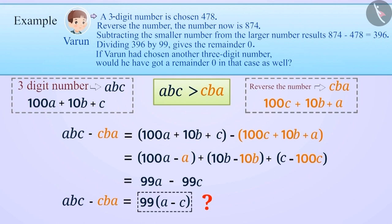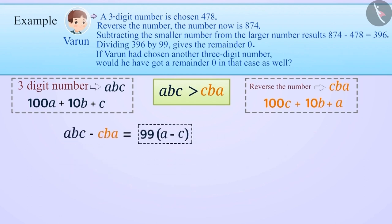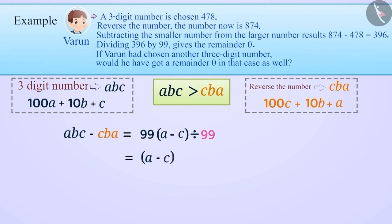Think for a while. This means that the result of ABC minus CBA is a multiple of 99. So if the result of ABC minus CBA is divided by 99, the result will be A minus C and the remainder will be 0. Therefore, we can say that this situation is true for every three-digit number.